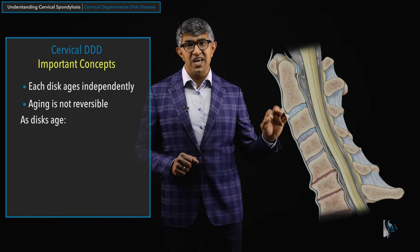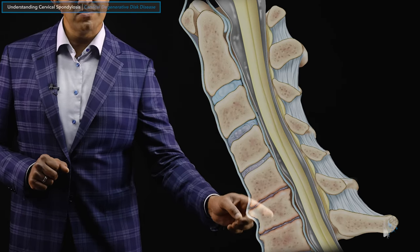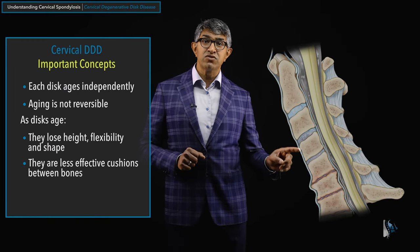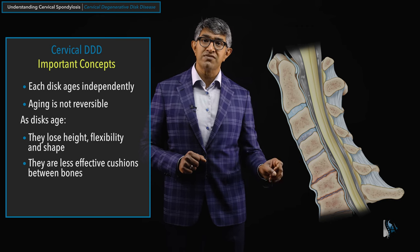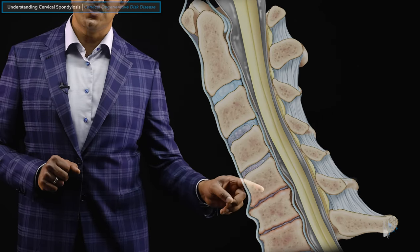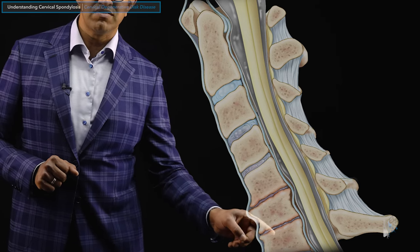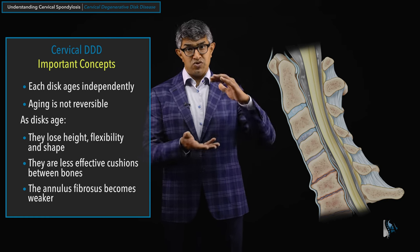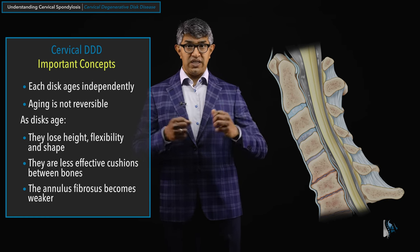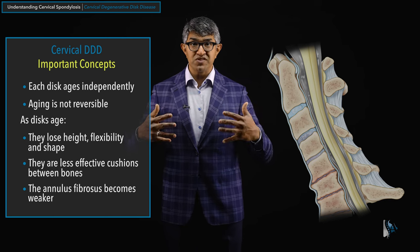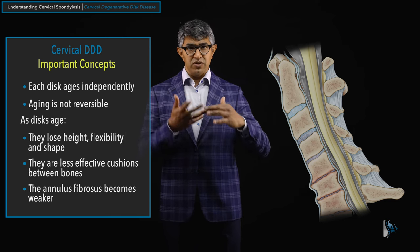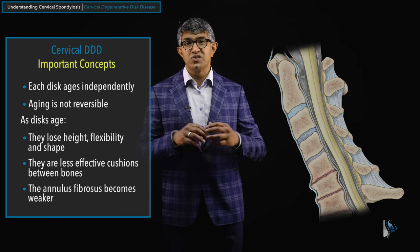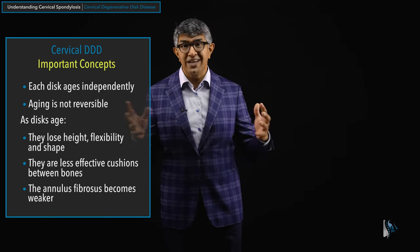As discs age, they lose their height, their flexibility, and their shape. They become less effective cushions, and because of that you start seeing reactive bony changes — like at C5-6 or C6-7. The annulus fibrosis can also become weaker because it no longer has that height. Like a rope or fabric — the tighter it is, the more resistant it is — but if it becomes lax, it can't always resist a herniation pushing outward, and is easier to tear.